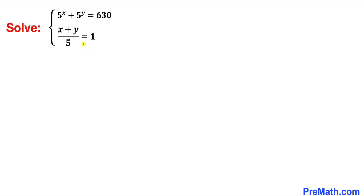Welcome to pre-math. In this video we are going to solve this given system of equations: 5^x plus 5^y equals 630, and the second equation is (x plus y) divided by 5 equals 1. Now we are going to solve for x and y.